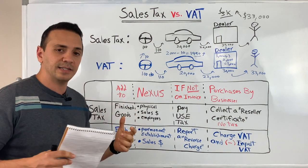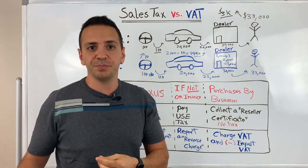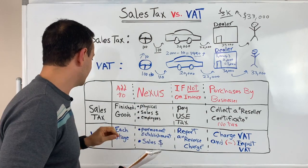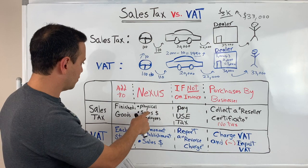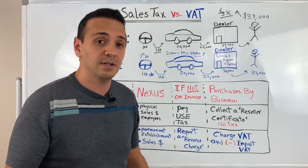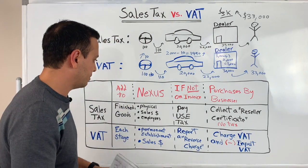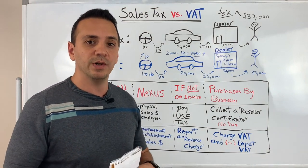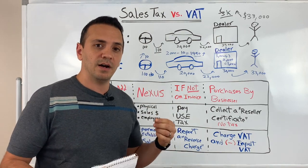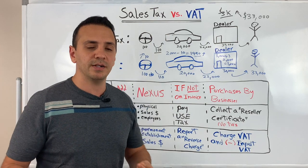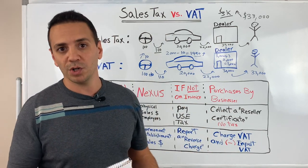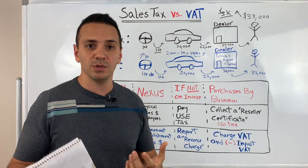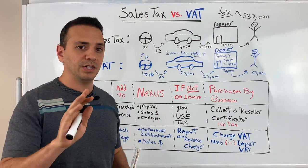The second difference is nexus. Nexus is a set of attributes that determines whether you have to collect and remit sales tax in a jurisdiction. For sales tax, nexus is based on physical location — if you have a physical location in a state, that typically means you have nexus. Other factors include the sales threshold in that state and the number of employees. With remote work, some employees moving around the country are triggering nexuses for their employers, though the government is creating rules to relieve employers from this.